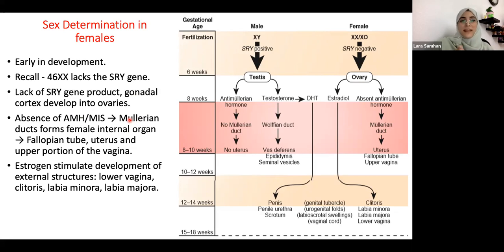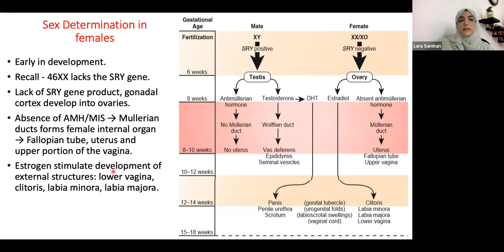The Müllerian duct, available in females during embryology, develops into the mature fallopian tube, uterus, and upper portion of the vagina. One of the most important hormones contributing to female reproductive anatomy is estrogen — estrogen helps in the development of the external female genitalia: the lower vagina, clitoris, labia minora, and labia majora. The SRY gene, if present, leads to male development via the Wolffian duct, developing into the vas deferens, epididymis, and seminal vesicles.